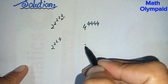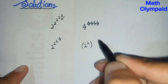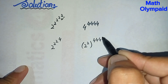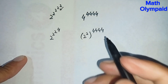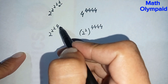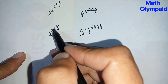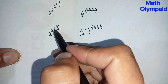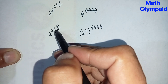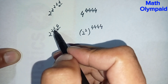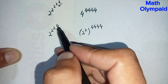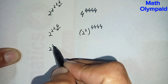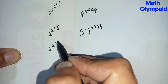On the right hand side we can write 4 as 2 raised to power 2. Then we simplify the exponent 2 raised to power 4: we need to multiply 2 four times, so 2 times 2 is 4, 4 times 2 is 8, and 8 times 2 is 16. So 2 raised to power 4 is 16. It becomes 2 raised to power 16.